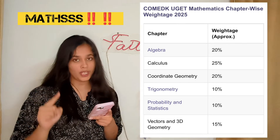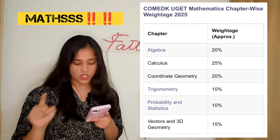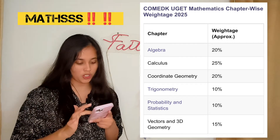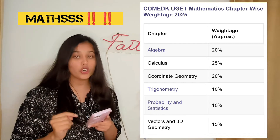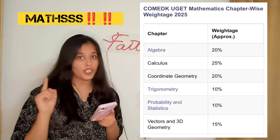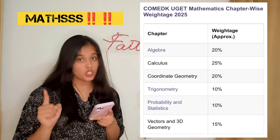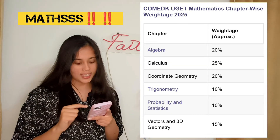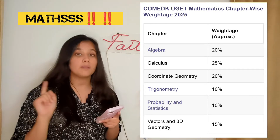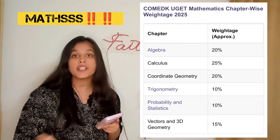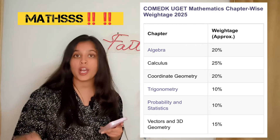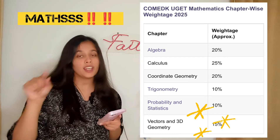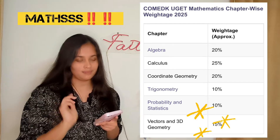Vectors and 3D geometry constitutes 15% of the questions. Focus on dot and cross products, direction cosines and ratios, and 3D line and plane equations. Do not miss this chapter as it's going to be very easy scoring — mark it with a star.